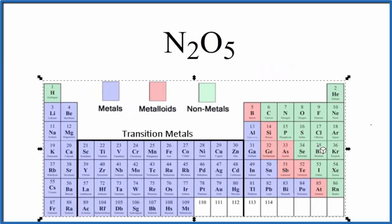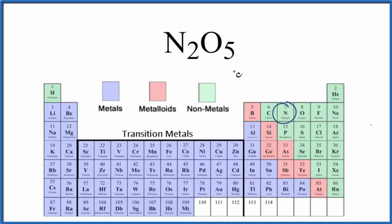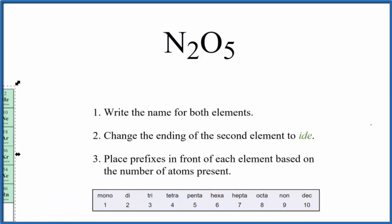So when we look at the periodic table, we can see right here is nitrogen and then oxygen. These are both nonmetals. So when we have nonmetals bonded together, that's a molecular, also called covalent compound.